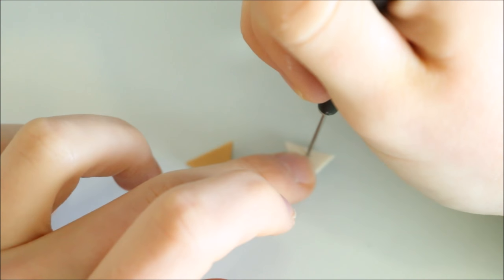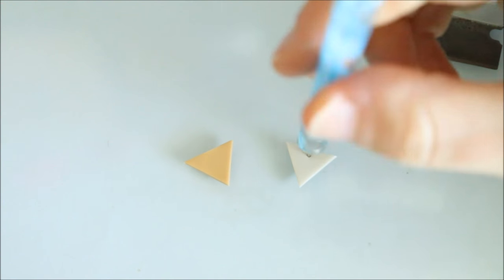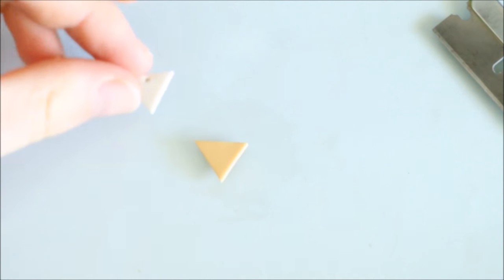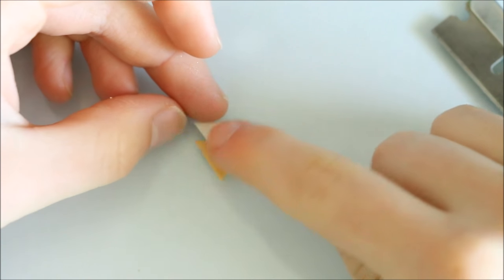Next I used my needle and dotting tools to create a hole at the top of the pearl triangle before positioning it onto the gold triangle and then baking.